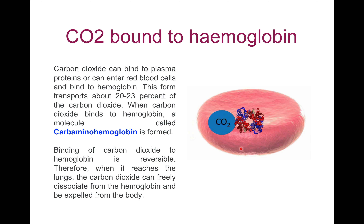Third, carbon dioxide is transported as a carbaminocompound. About 20 to 23% of carbon dioxide that enters erythrocytes combines with the amine radical of the globin part of hemoglobin and forms carbaminohemoglobin. The binding of carbon dioxide to hemoglobin is reversible; hence when the blood reaches the lung, carbon dioxide can freely dissociate from hemoglobin and be expelled from the body.